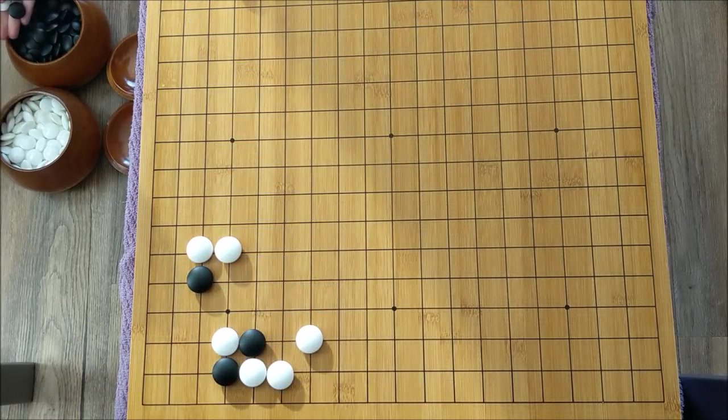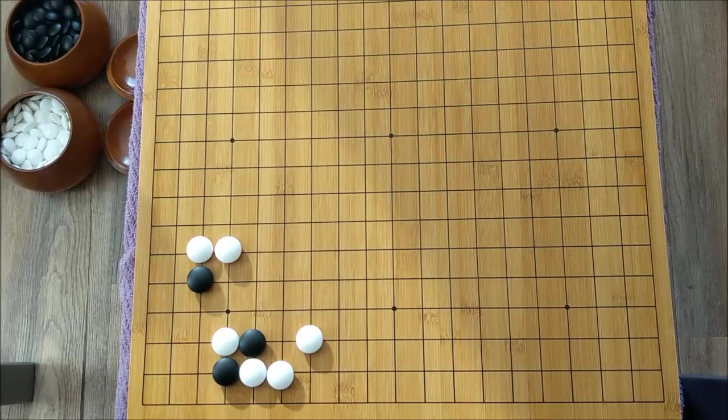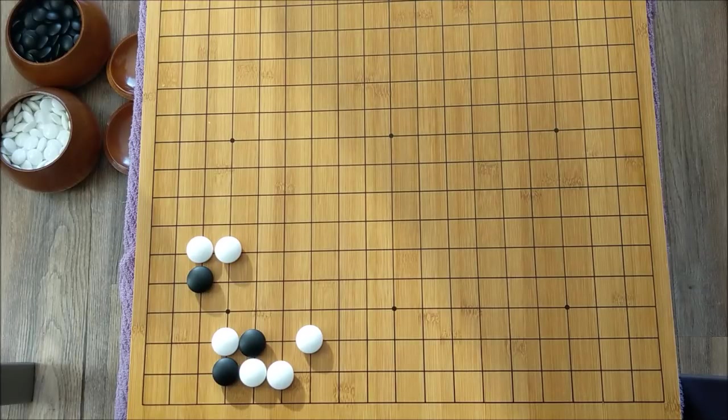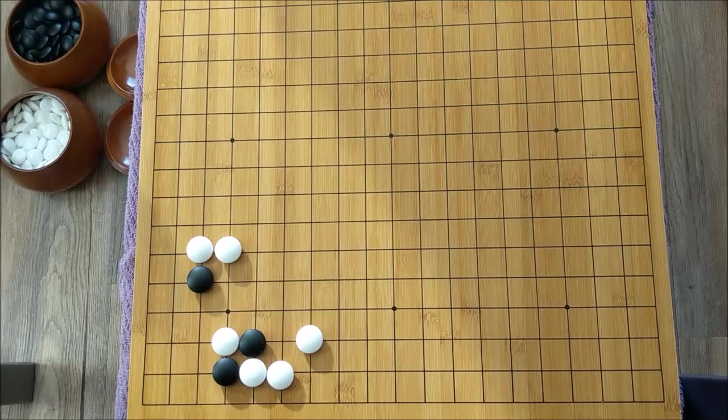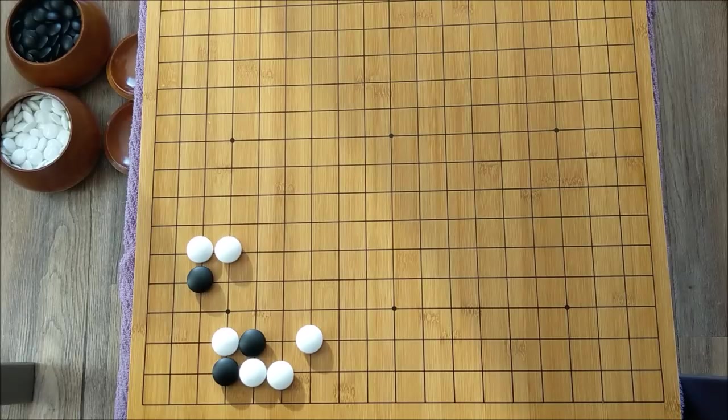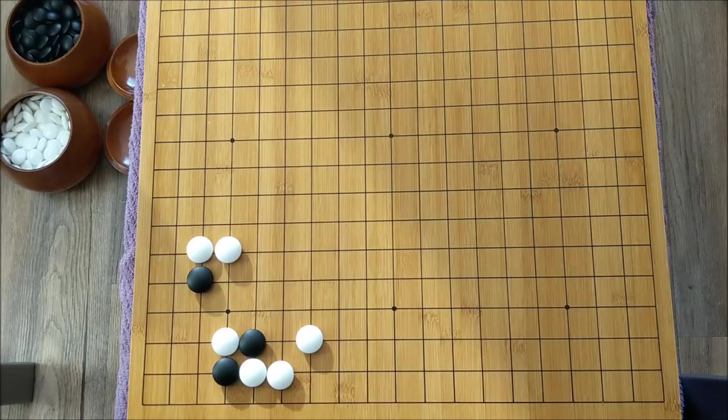Now we're into the hard category of problems. So you might not be able to get this one, but give it your best shot. The objective is kind of ambiguous. And that's what I like about some of these problems. It's not completely cut and dry. It's not just kill this group or make this group live all the time. This says, what is the best way for black to settle his stones in the corner? So you're not trying to kill anything. You're not trying to be unconditionally - you're simply trying to make your stones in the corner be settled in the most efficient way possible. And in the most advantageous way possible.